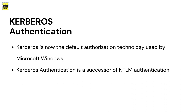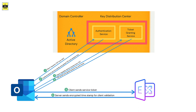The third authentication type is Kerberos. Kerberos is an authentication protocol and is the default protocol on Windows versions above Windows 2000, replacing NTLM. Inside the domain controller, we have Active Directory and a Key Distribution Center (KDC). The KDC includes two services: the Authentication Service and the Ticket Granting Service.